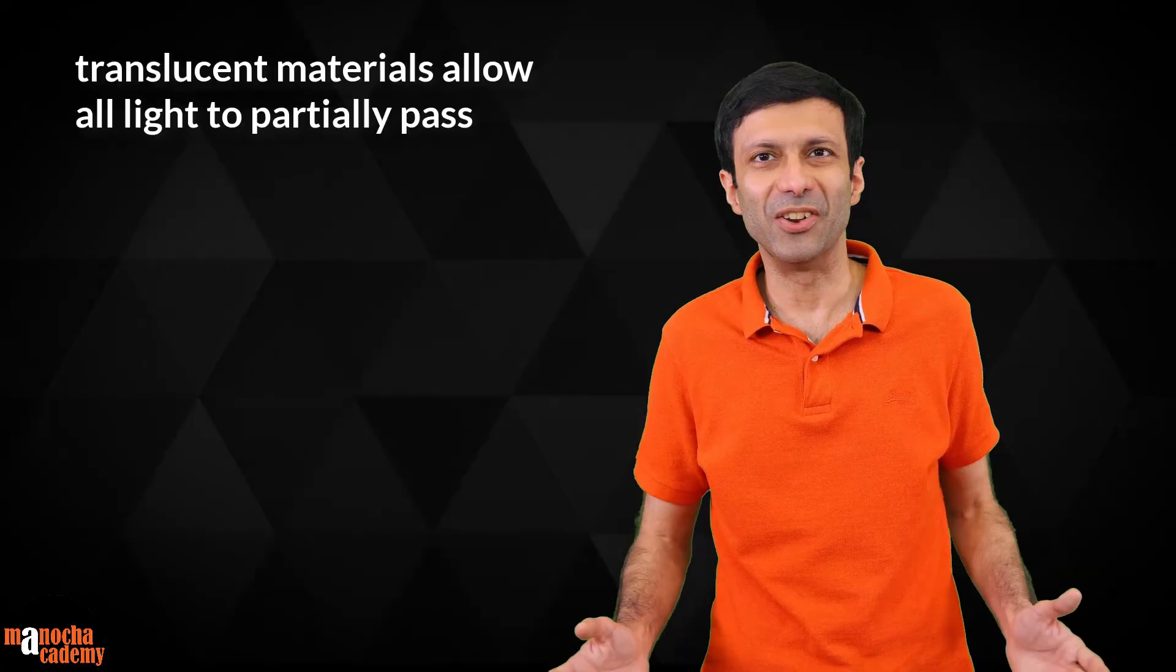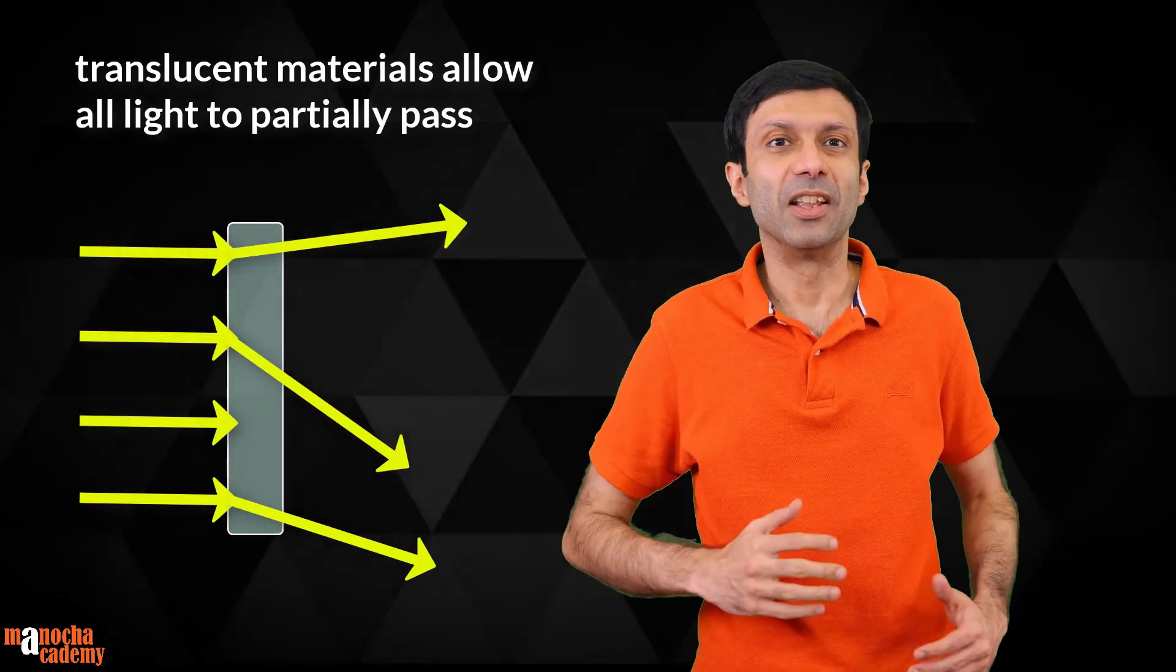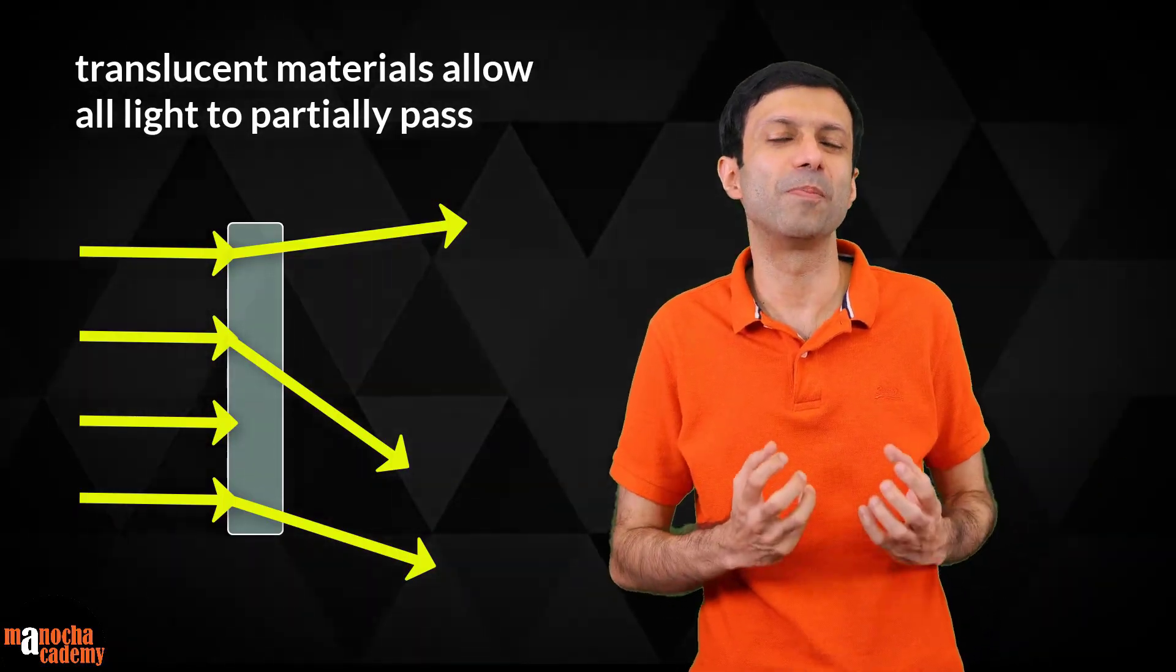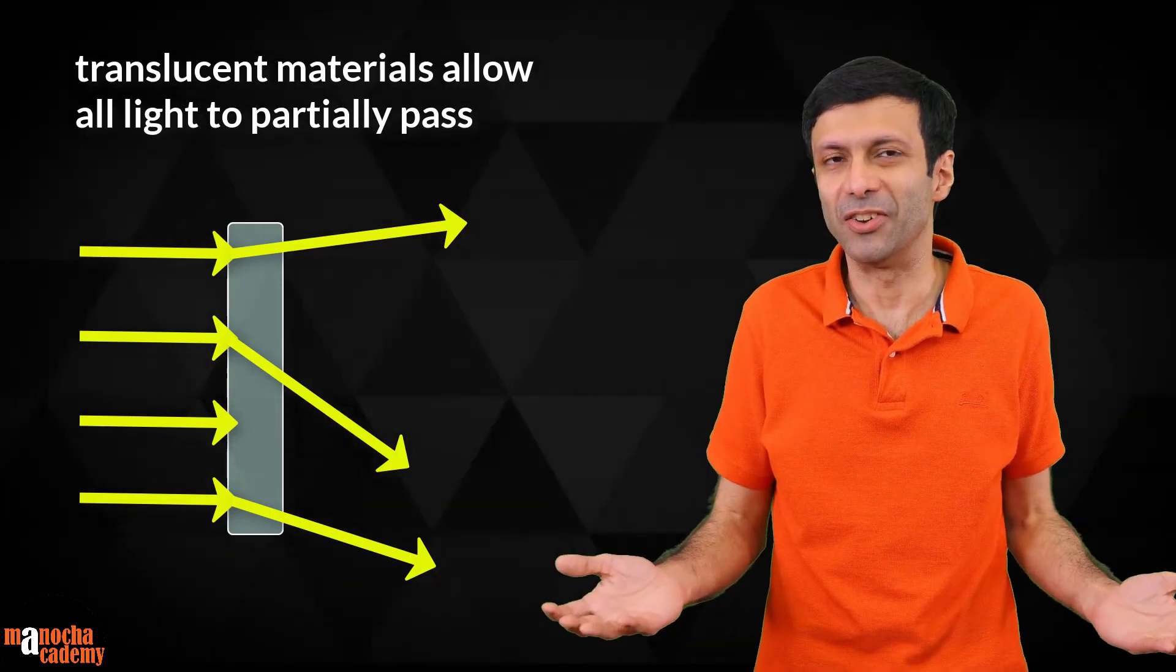Translucent materials are materials that allow light to partially pass through. The remaining light is either reflected or absorbed by the material. What are some examples of translucent materials? Can you tell me? That's right.